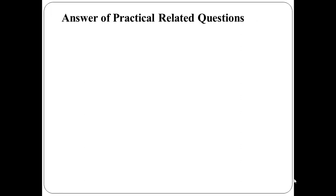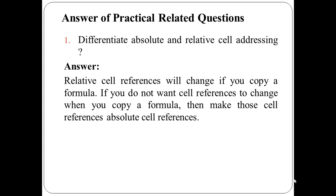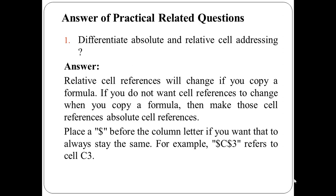Now let us discuss the answers of practical related questions. The first question is differentiate absolute and relative cell addressing. The answer of this question is as you know relative cell references will change if you copy a formula. If you do not want cell references to change when you copy a formula then make those cell references absolute cell references. To do the absolute cell references place a dollar symbol before the column letter if you want to put that to always stay the same. For example dollar C dollar 3 always refer to cell C3 even if you are going to copy a formula in a different cells and column.